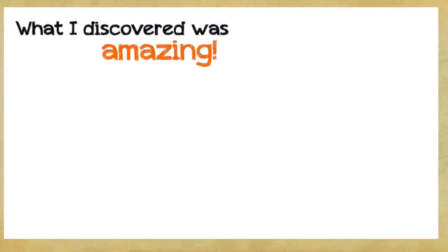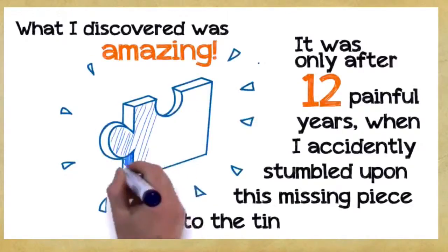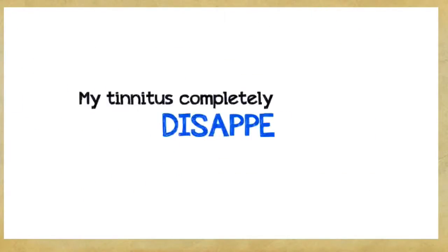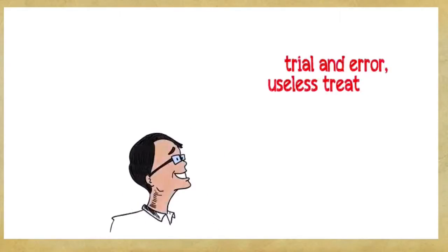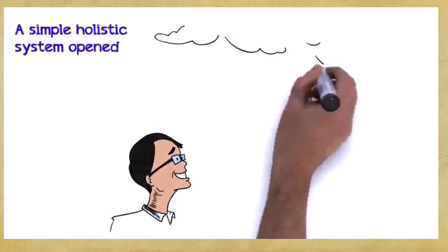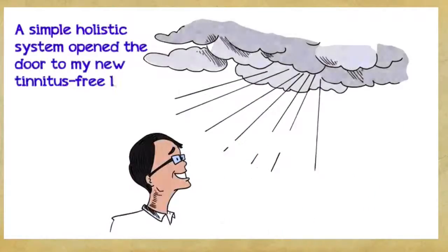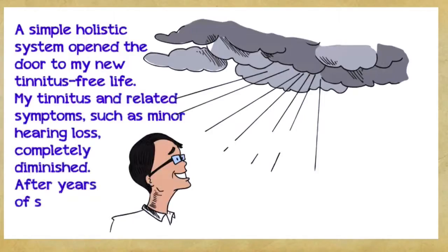Hundreds of therapies later, I began to look for a possible pattern. What I discovered was amazing. It was only after 12 painful years when I accidentally stumbled upon the missing piece to the tinnitus puzzle that my tinnitus completely disappeared. After countless rounds of trial and error, useless treatments, disappointments, and agony, a simple holistic system opened the door to my new tinnitus-free life. My tinnitus and related symptoms such as minor hearing loss completely diminished. After years of suffering, I was finally free from tinnitus.